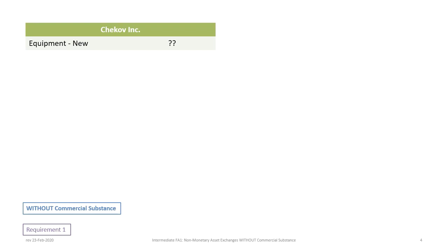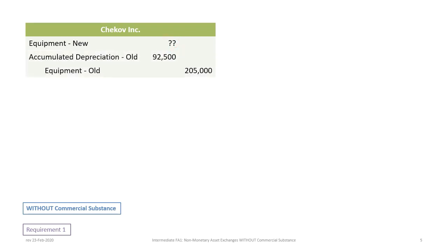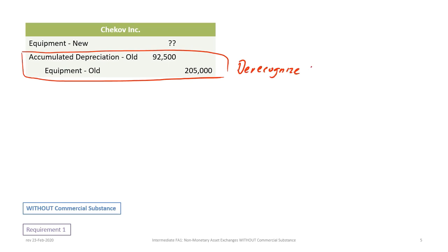We are replacing equipment, so we're going to remove equipment from our balance sheet and bring on new equipment. In a normal transaction, we would record the equipment at its cost, but here we're not quite sure what the value of the new equipment is going to be. So let's start by removing the old asset from the books — de-recognizing the old asset. By doing that, we debit accumulated depreciation of $92,500 and credit the cost of that equipment for $205,000.